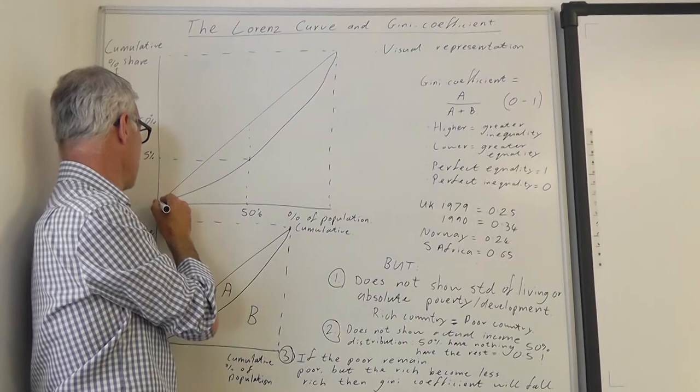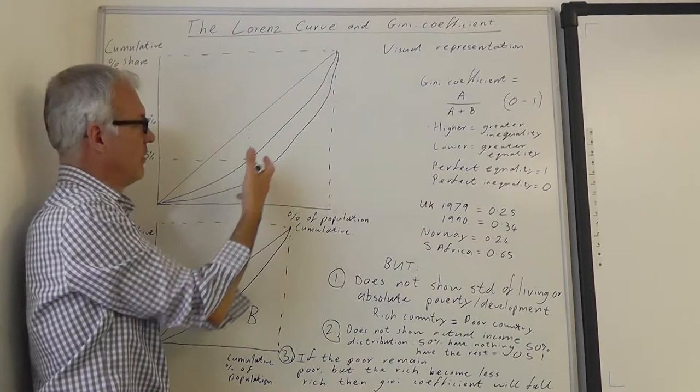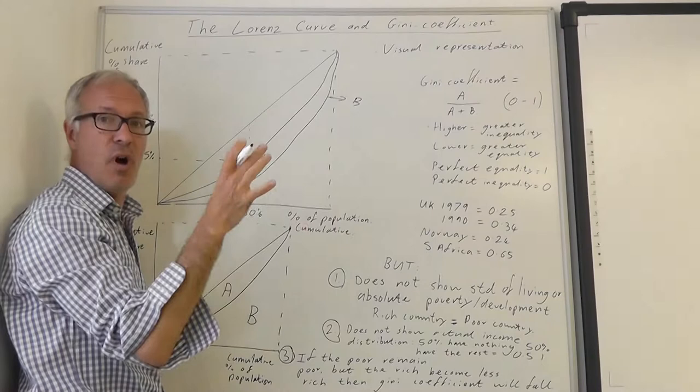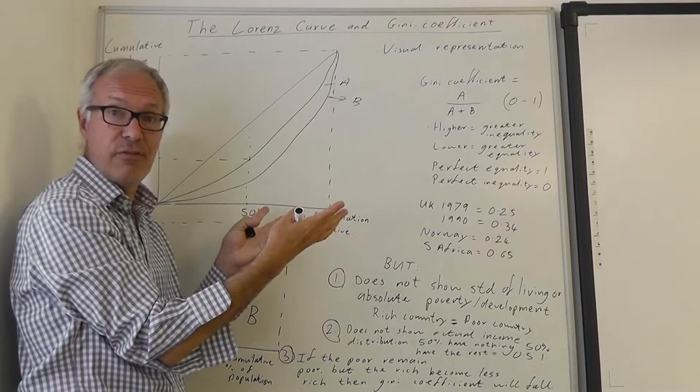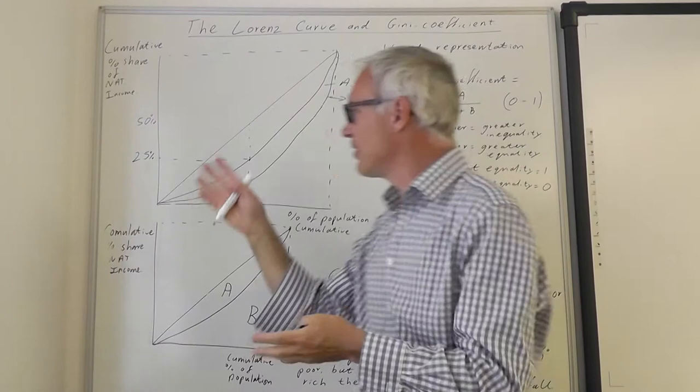Yet a more unequal society would be a Lorenz curve something like this. This country here, country B, would be more unequal than country A because we're further away from the 45 degree line.